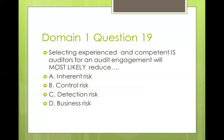Question nineteen: selecting experienced and competent IS auditors for an audit engagement will most likely reduce inherent risk, control risk, detection risk, or business risk. Detection risk is the only risk in the audit risk model that auditors can directly control. Bringing in experienced and competent auditors reduces detection risk. Inherent risk comes with the business and only management can directly impact it. Control risk is the risk that controls fail — only management can set up control systems. Business risk from internal and external forces is also management's responsibility. So the answer is C — detection risk.